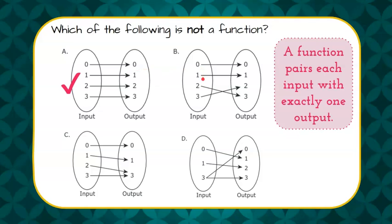In choice B, 0 to 1 output, 1 to 1 output, 2 to 1 output, 3 to 1 output. It's a function.